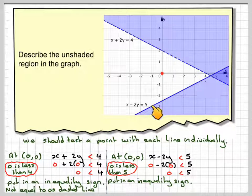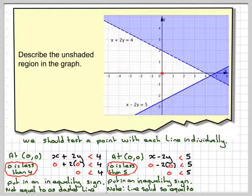Now we notice this line here is actually solid so we can include points on the line. Note the line is solid so it is equal to, so we need to add in an equal sign there.